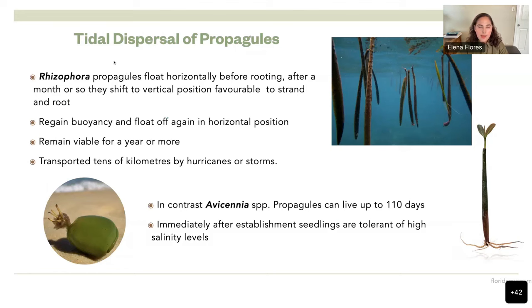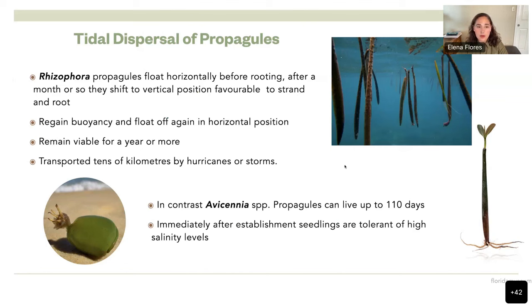This ends up providing another advantage: tidal dispersal of propagules. In Rhizophora, this is a propagule of red mangrove, and this is a propagule from black mangrove. Propagules float horizontally in the water for a couple of days — probably up to a month — and then switch to a vertical position where they can attach to the substrate and start rooting.